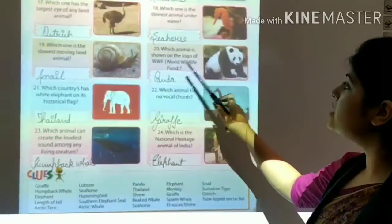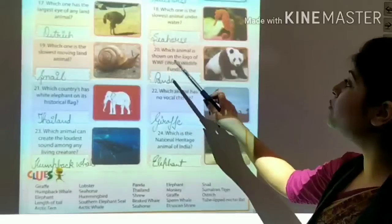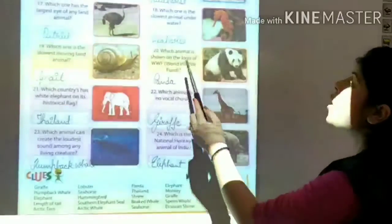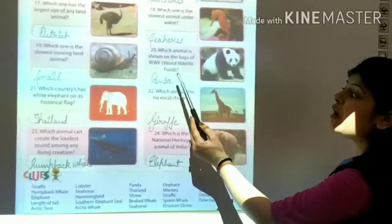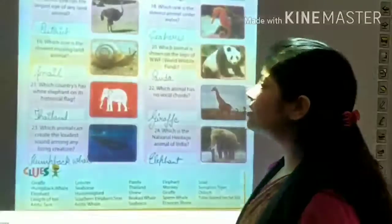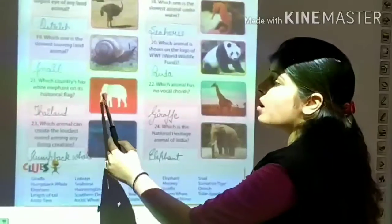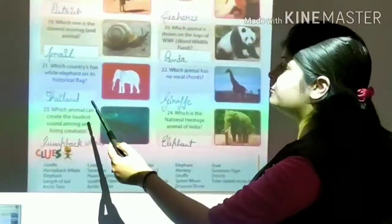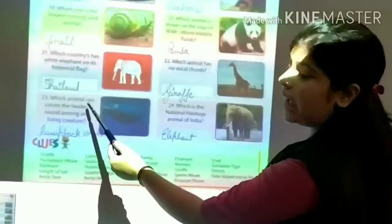Which animal is shown on the logo of WWF, the World Wildlife Fund? It's panda. Question 21: which country has white elephant on its historical flag? The country is Thailand.